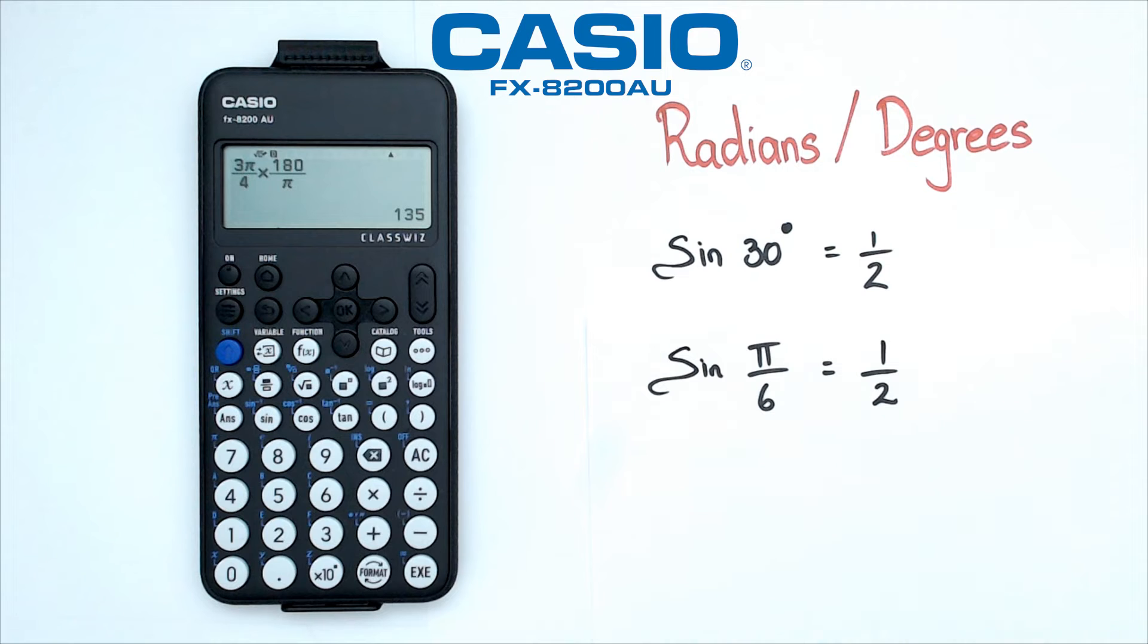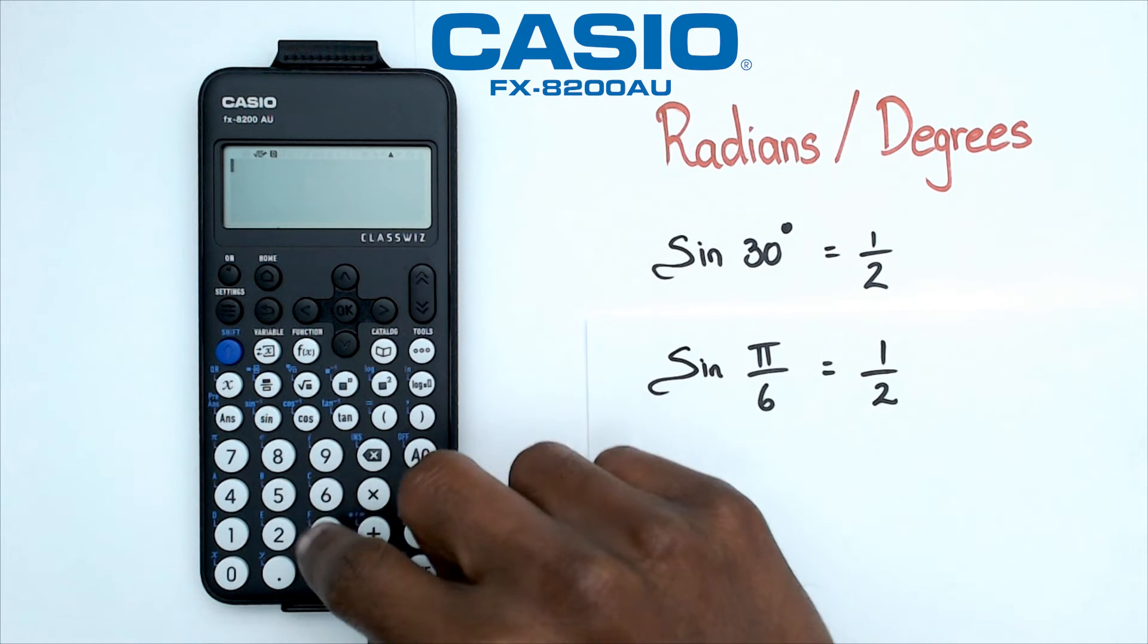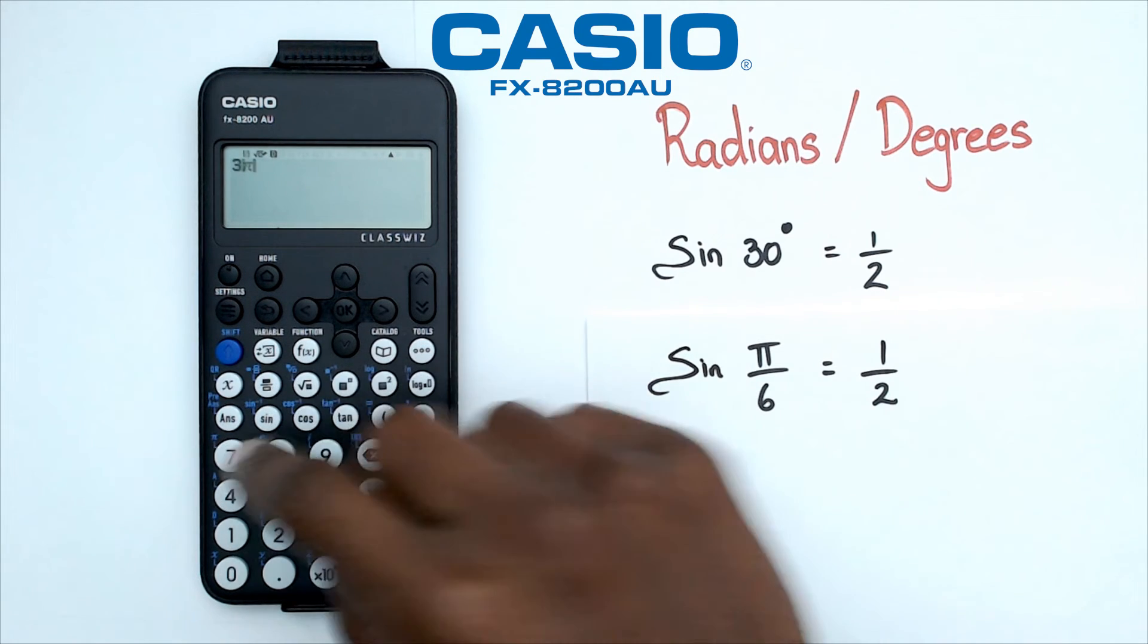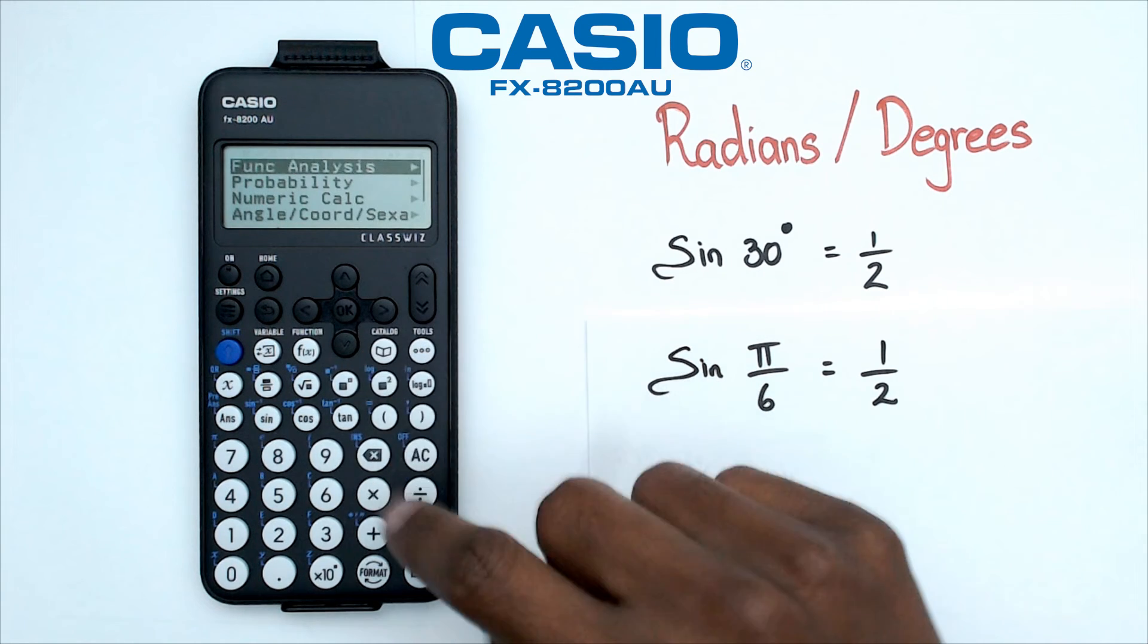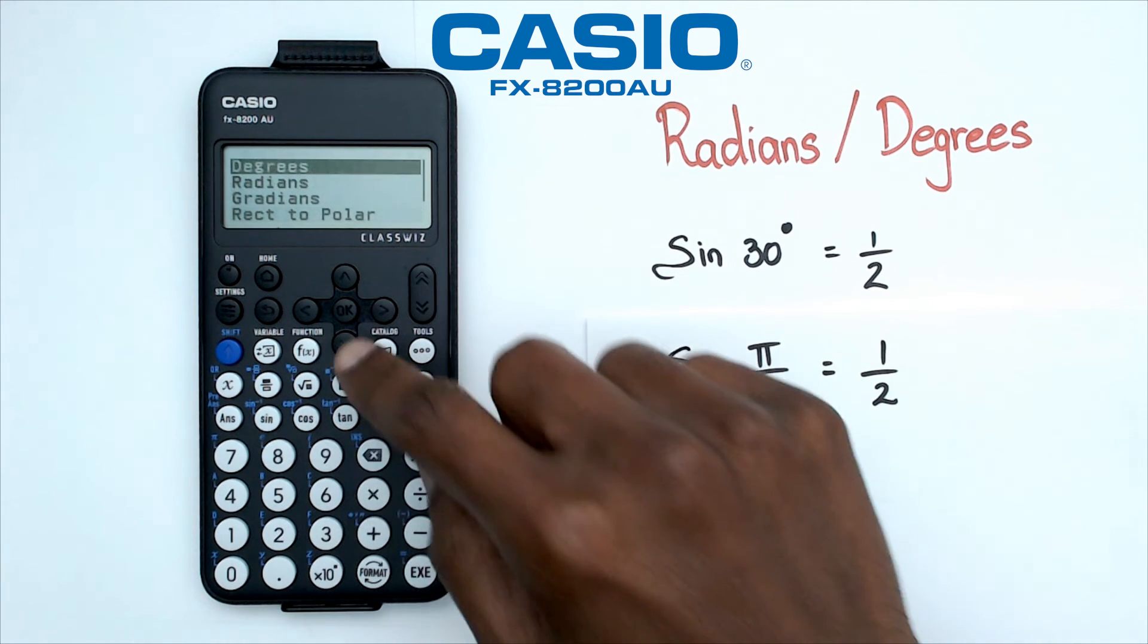Now sometimes you forget that, right? Sometimes if you do forget it, what you could do is you could actually go 3 pi, so go 3 pi over 4, and then go into the catalog menu, go into angle, go into radians.